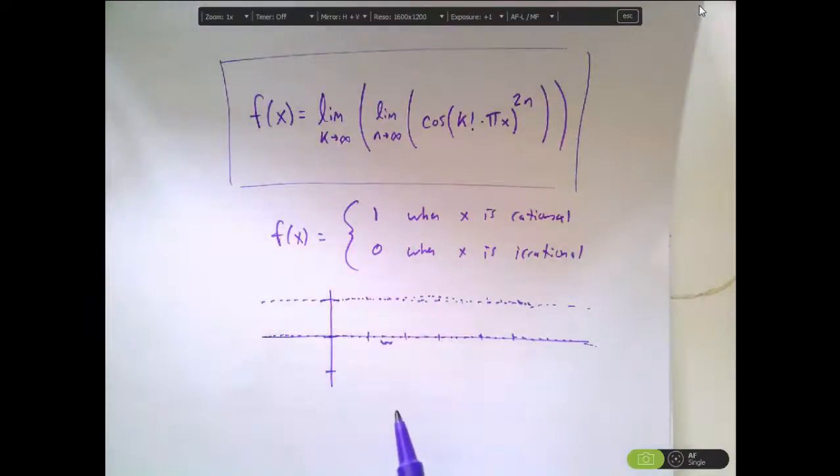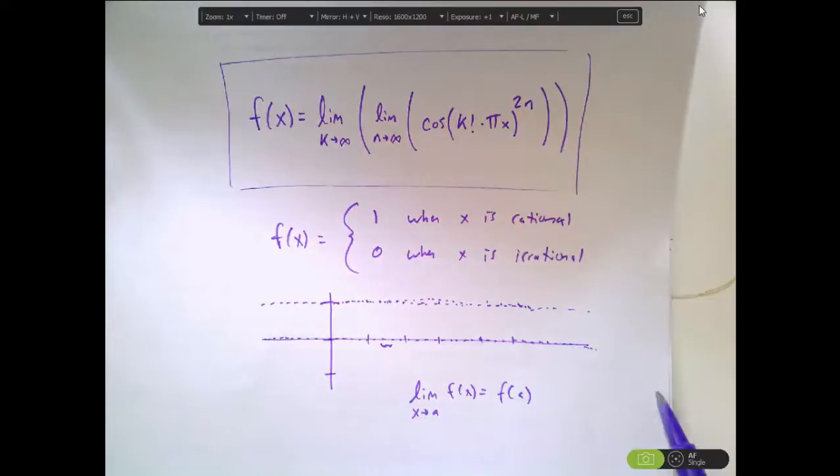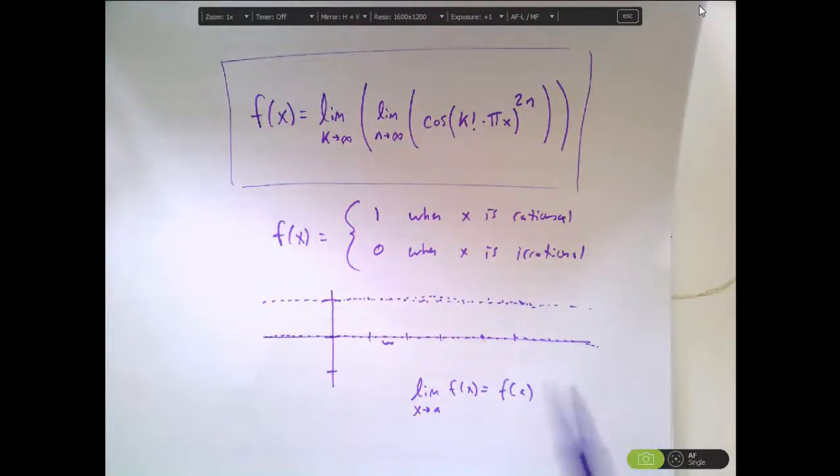Think back to what we said today in class about continuity. We said that a function is continuous at a point A if the limit as x approaches A is equal to the value of the function at that point. Well, here we have just a whole bunch of isolated points. So we can't possibly even begin to start taking the limit. So what that means is that this function is defined everywhere, but it is continuous nowhere. There is no point at which it is continuous. And that's why I called it a monster.